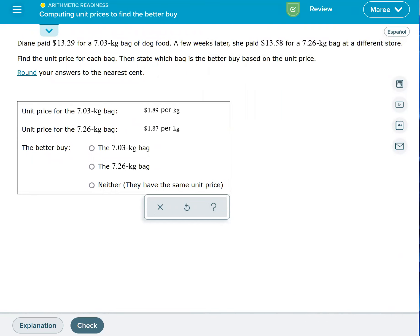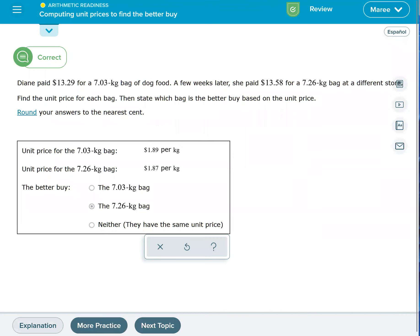We'll type in $1.87. So which one is cheaper? The 7.26 kilogram bag. Of course, if they were the same price, then our answer would be neither. That is the end of the lesson.